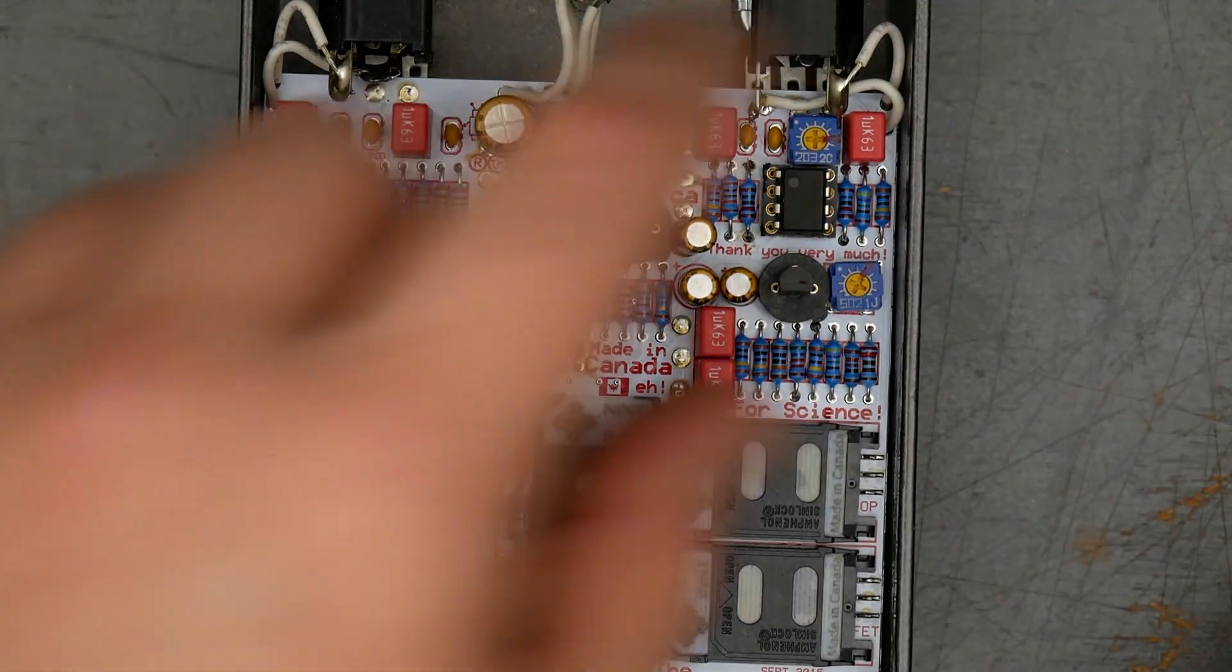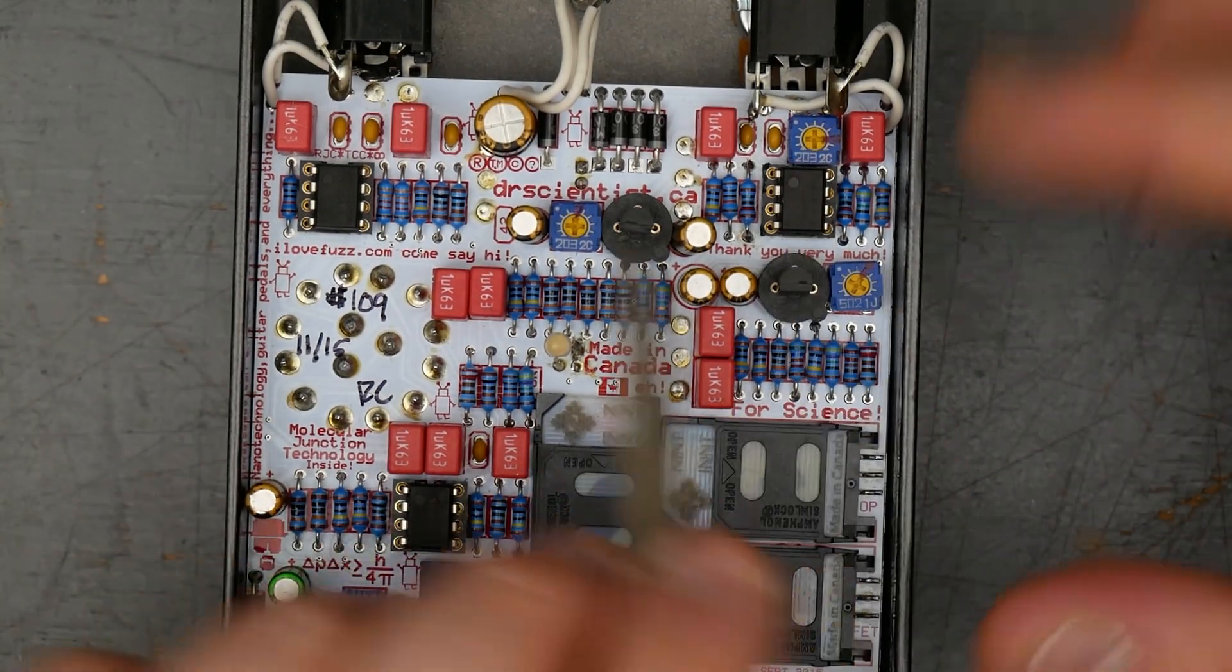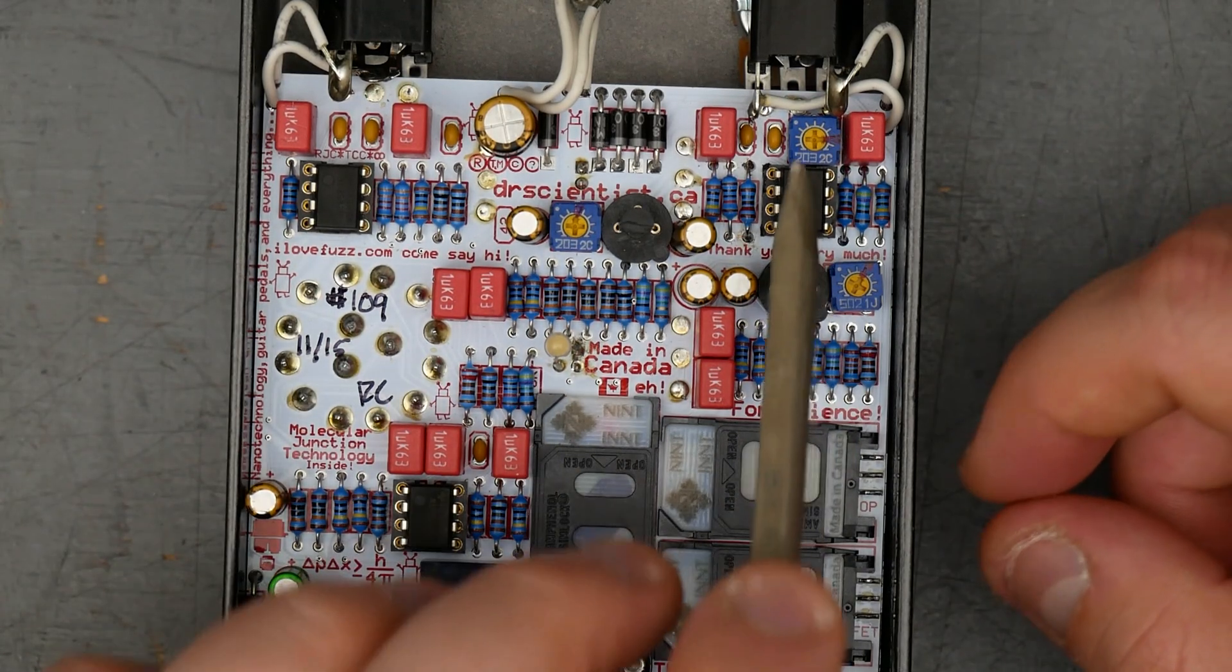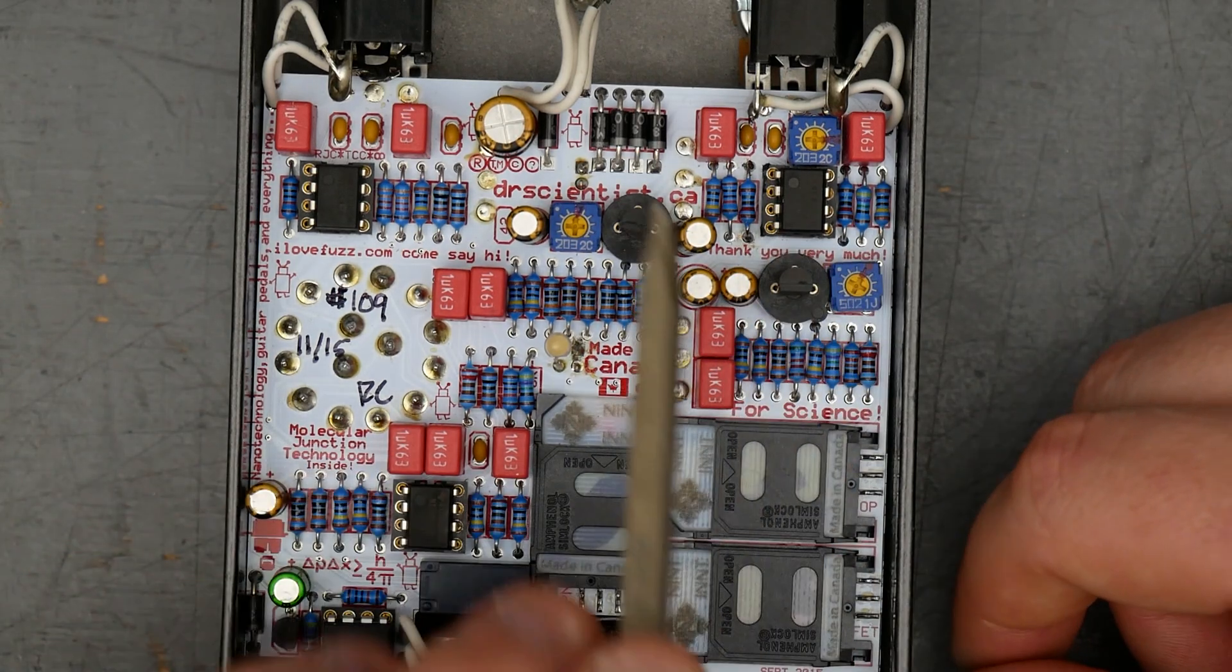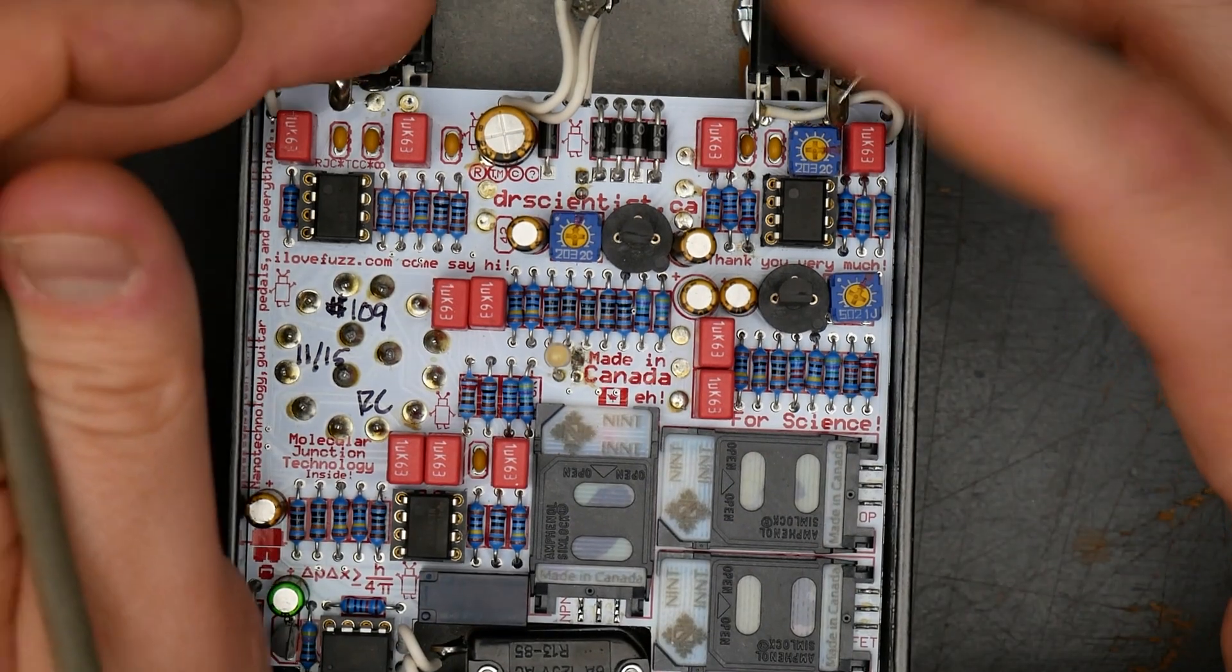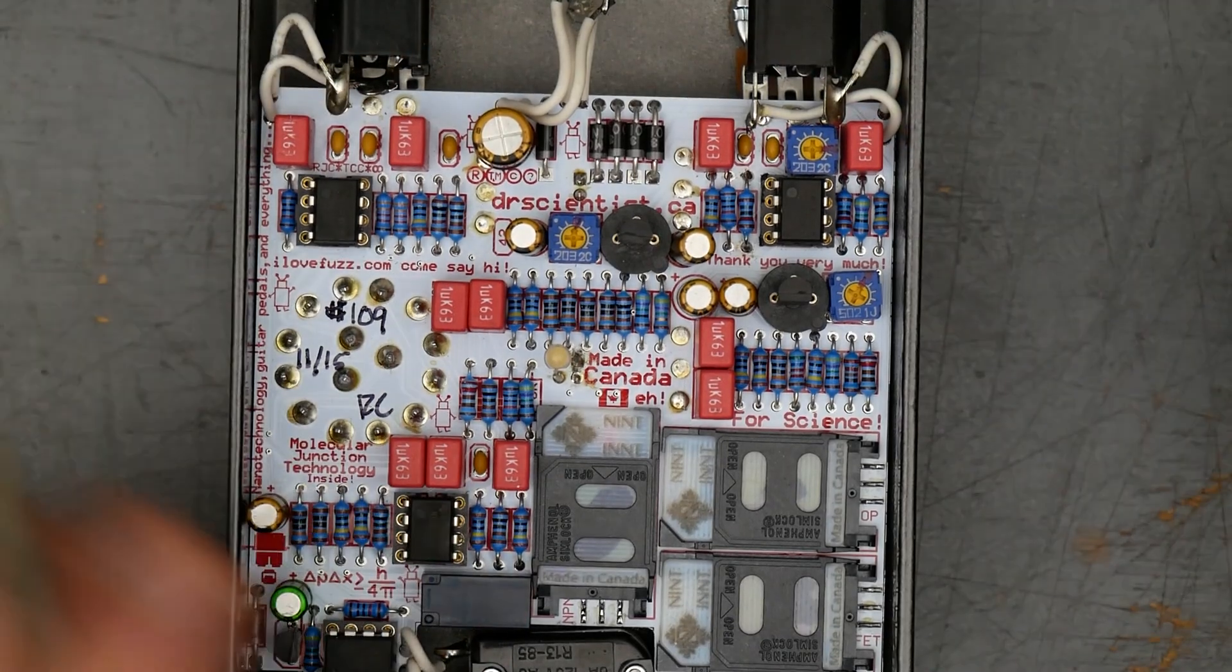So you essentially have three separate gain pedals all built into one and the associated components are built all around it. We also have some trim pots. These are presumably just adjusting trims or bias conditions for the transistors and the op amp gain stage. So I'm assuming that these three are the actual audio circuit in here.